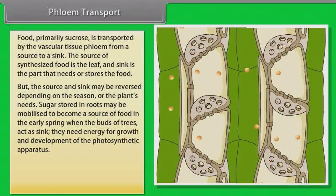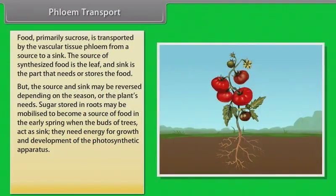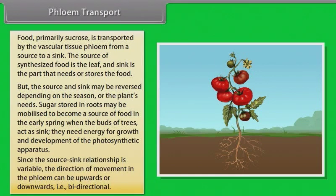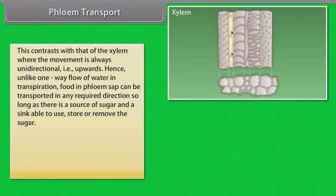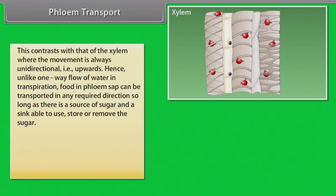Sugar stored in roots may be mobilized to become a source of food in early spring, when the buds of trees act as a sink — they need energy for growth and development of the photosynthetic apparatus. Since the source-sink relationship is variable, the direction of movement in the phloem can be upwards or downwards, which means bidirectional. This contrasts with the xylem, where the movement is always unidirectional — upwards. Hence, unlike the one-way flow of water in transpiration, food and phloem sap can be transported in any required direction, so long as there is a source of sugar and a sink able to use, store, or remove the sugar.